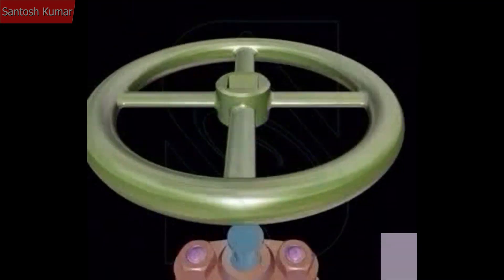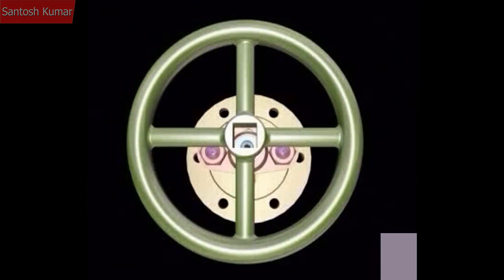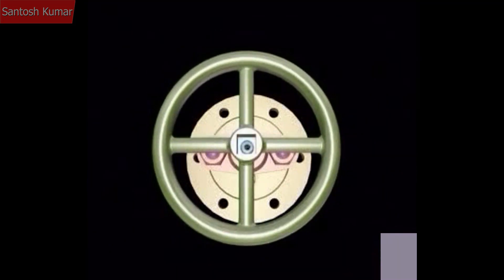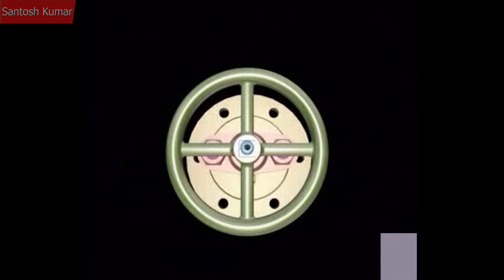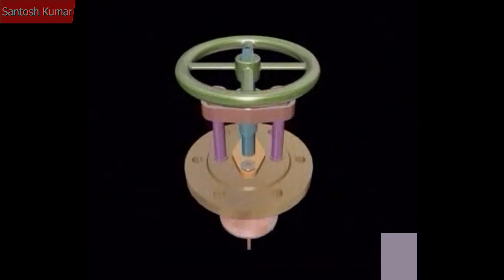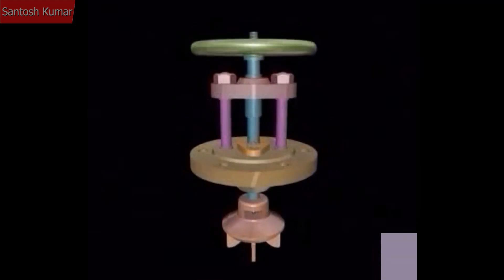At the top of the spindle, the hand wheel is mounted using a nut. The square section of the spindle meets with the square hole of the hand wheel.